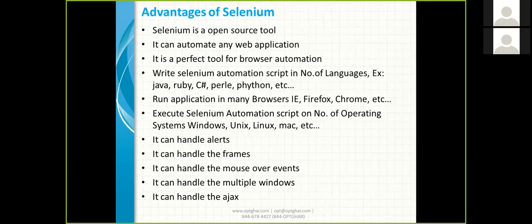Why choose Selenium over other automation tools? First, Selenium is an open source tool, so it is free. Among other free tools like Sahi and Squish, Selenium is preferred because it can automate any web application. It is a perfect browser automation tool with many advantages.